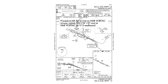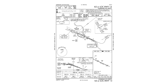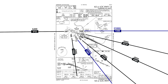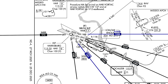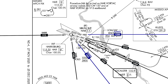The note on this approach also says the procedure is NA for arrivals on Victor 12 eastbound. Victor 12 is on the 281 radial. Flying inbound eastbound to the Harrisburg Vortac will be on a course of 101 degrees. To join the feeder route course of 118 degrees, we only need to turn right 17 degrees — well within the 120-degree max. So why is it disallowed?